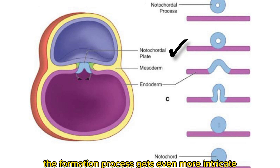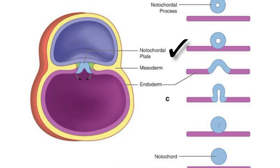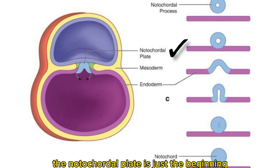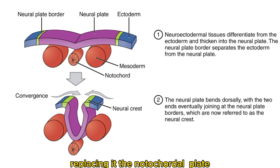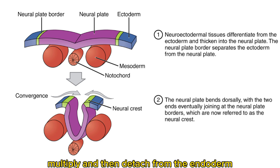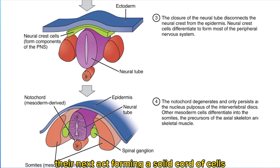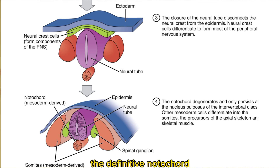From here, the formation process gets even more intricate. The notochordal plate is just the beginning. As the hypoblast steps aside, endoderm cells move into the spotlight, replacing it. The notochordal plate cells proliferate, multiply, and then detach from the endoderm, forming a solid chord of cells — the definitive notochord.